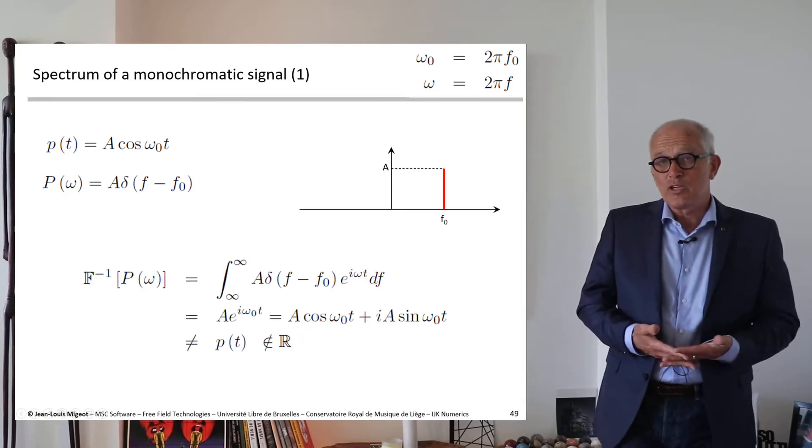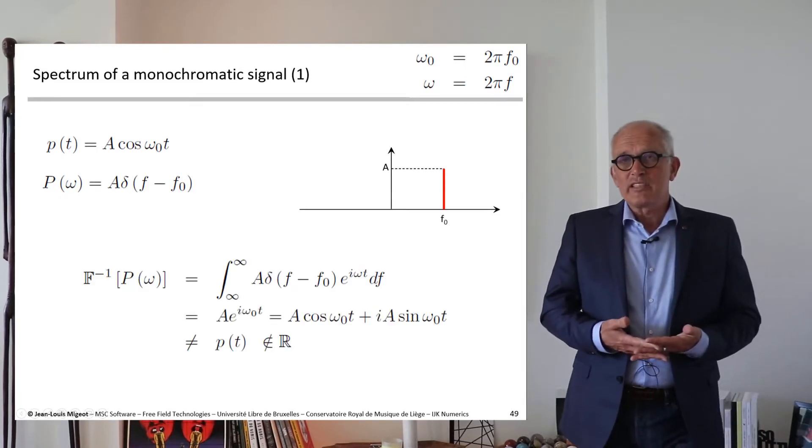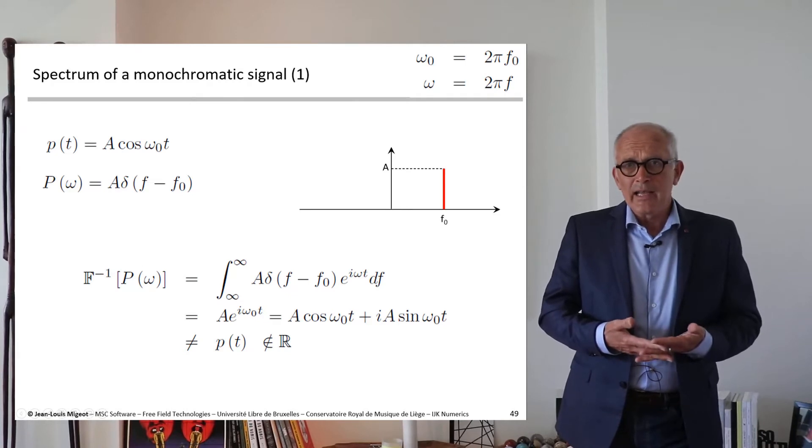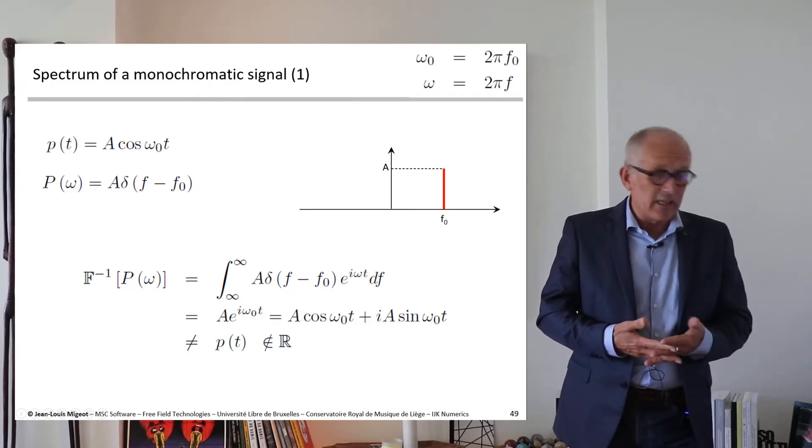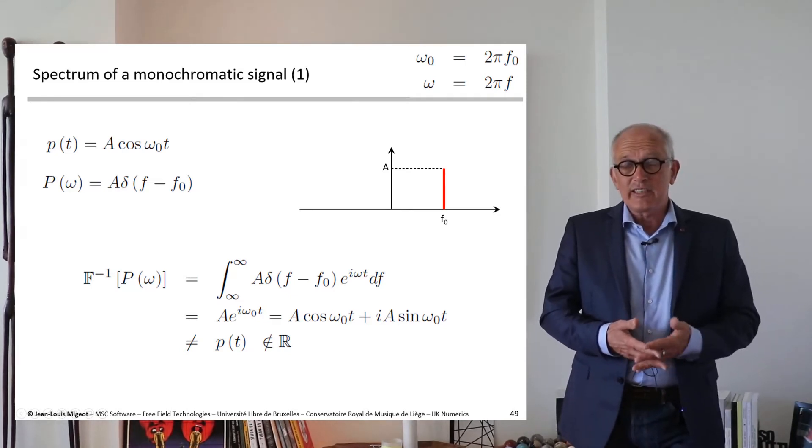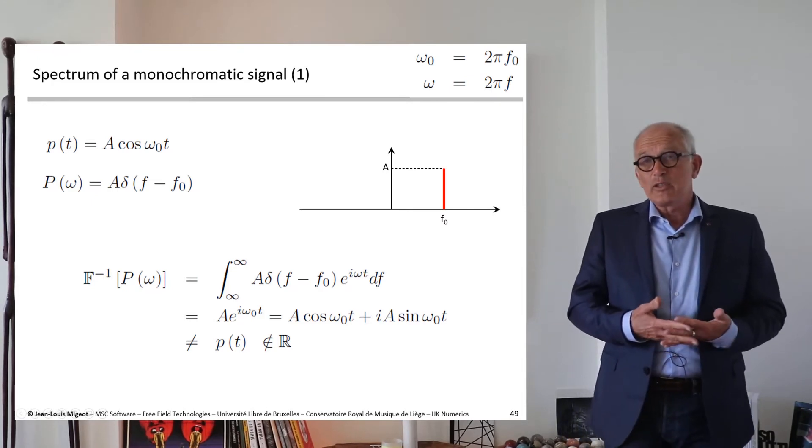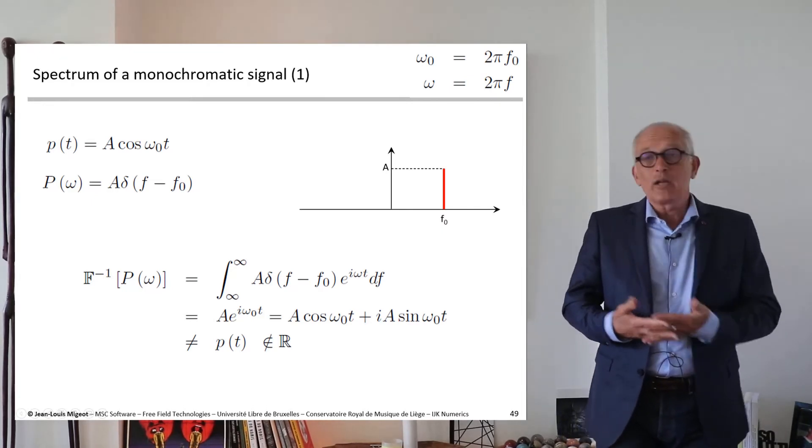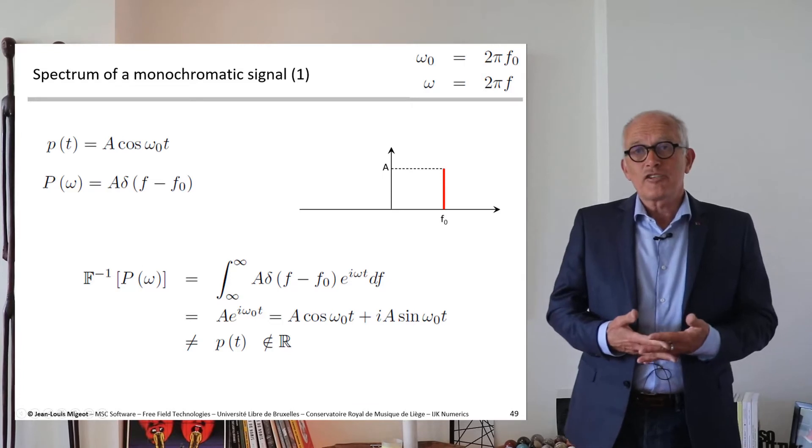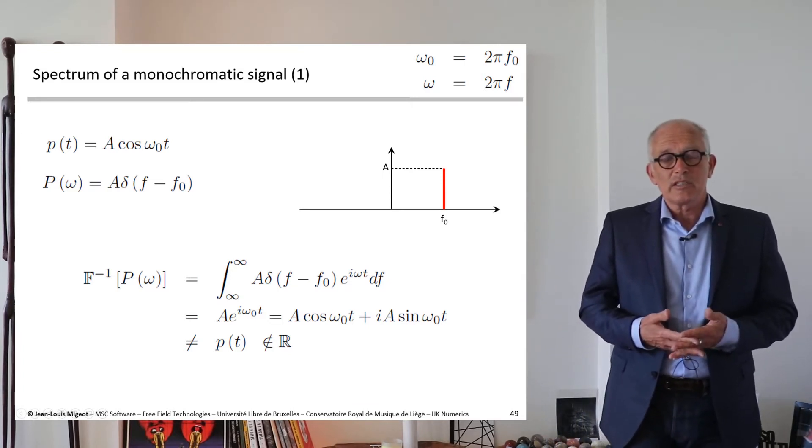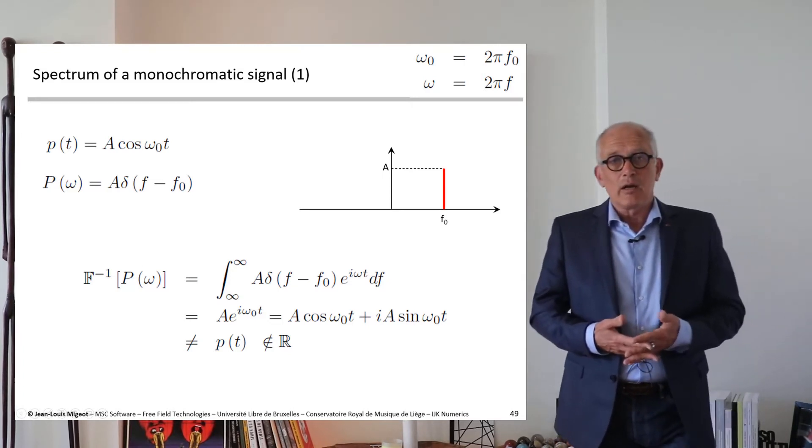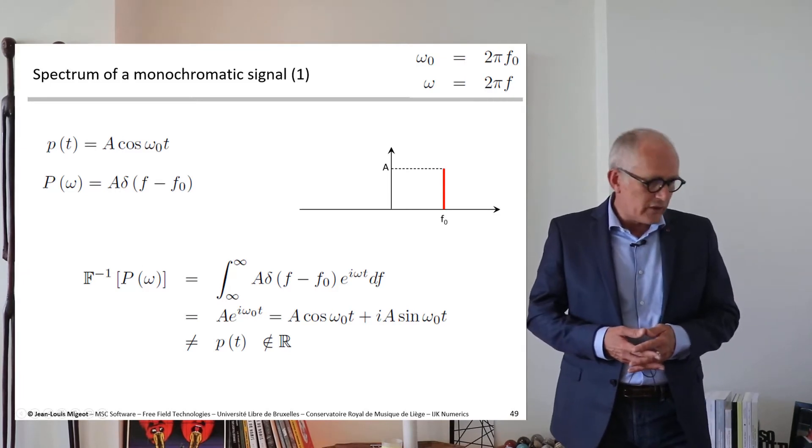Indeed, if I take the inverse Fourier transform of that expression, I see that I obtain not the signal I started with but a signal that has the right real part but that also has an imaginary part. So it's not the signal from which we started and it is not even a real signal.